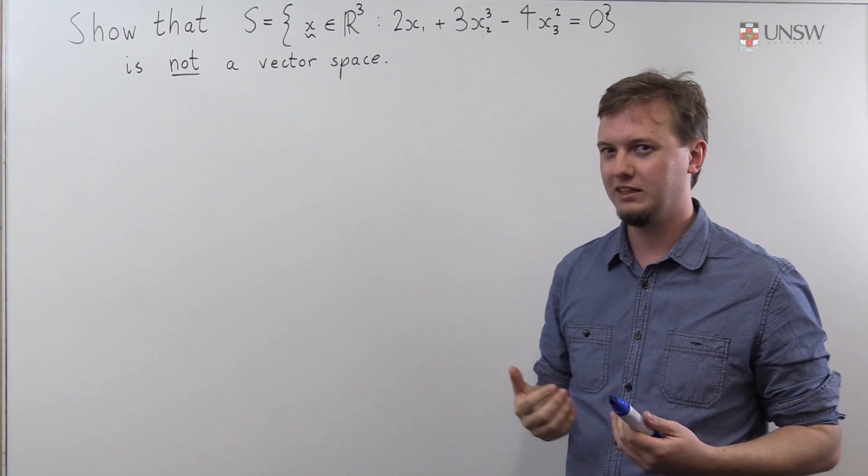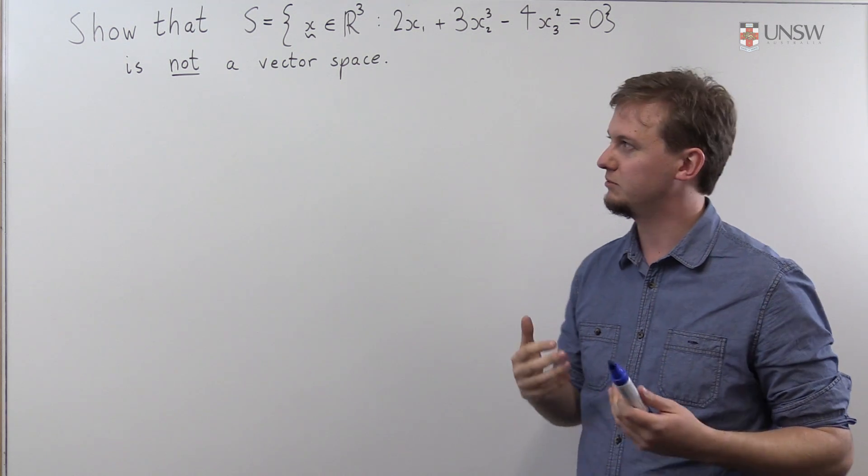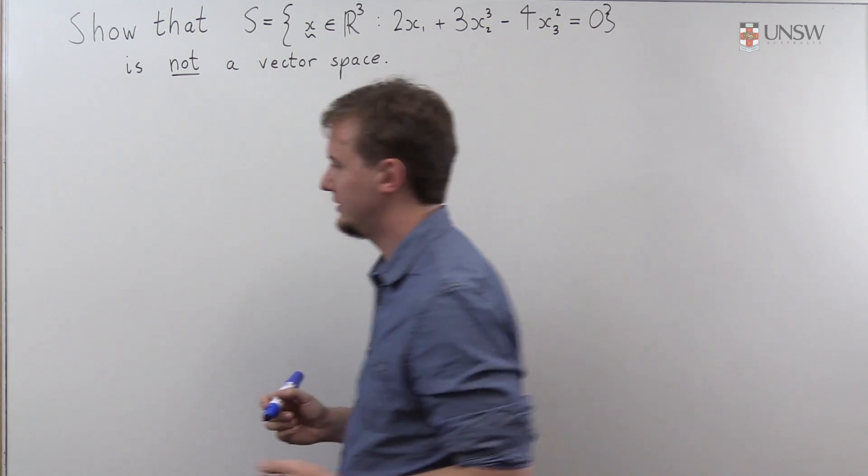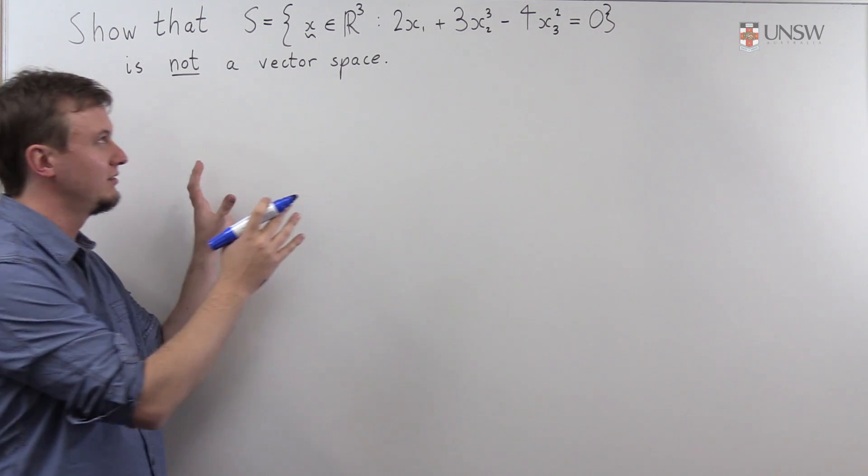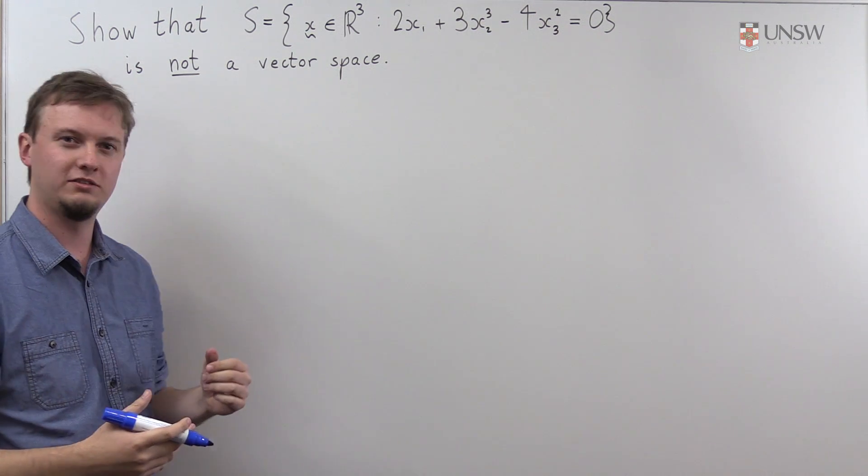So to me, looking at that, that's telling me that closure under scalar multiplication is in danger, it's probably not going to work. So let's actually just show that. Let's take a vector from this set and scale it by a scalar and show it no longer satisfies this equation.